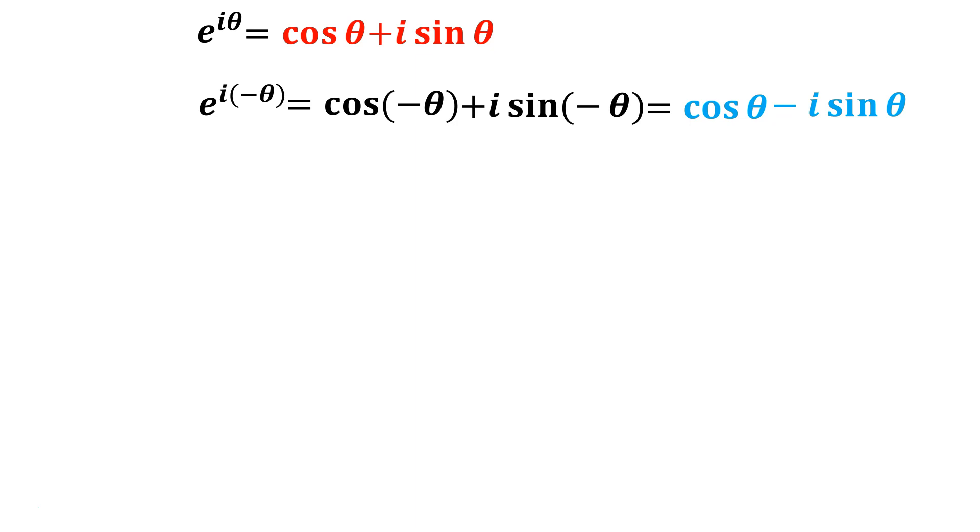Okay, now what can we do at the next stage? What we can do is just add up the corresponding sides. I can say that it's e to the iθ plus e to the i negative θ. That is equal to cos θ plus i sin θ, so the red side there, plus cos θ in blue, minus i sin θ in blue.